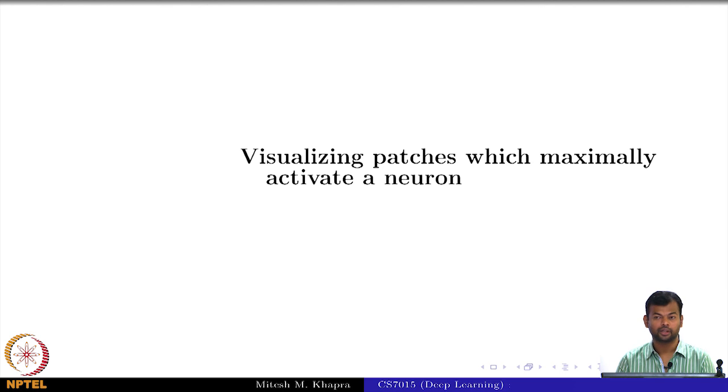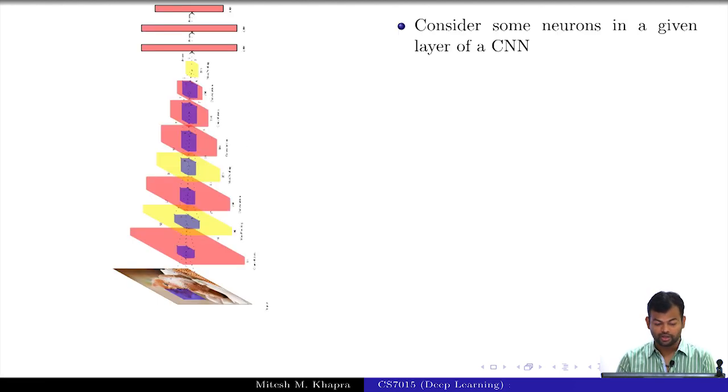That is the first thing that we are going to look at: how do you visualize patches which are causing a neuron to fire. This is again our VGG network, just put it vertically. You have passed an image to that and then at every layer you are applying convolutions and then max pooling and so on, right up to the last layer.